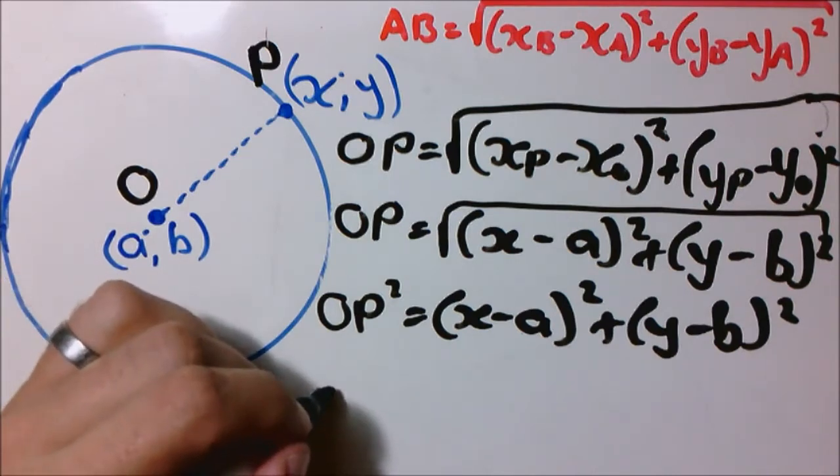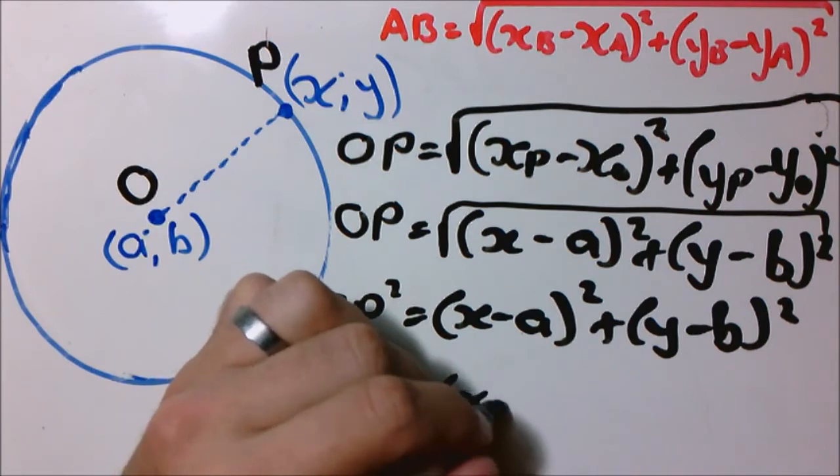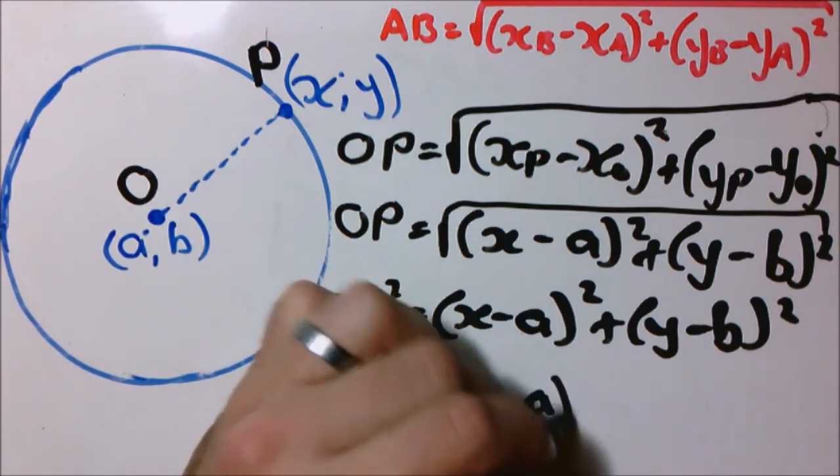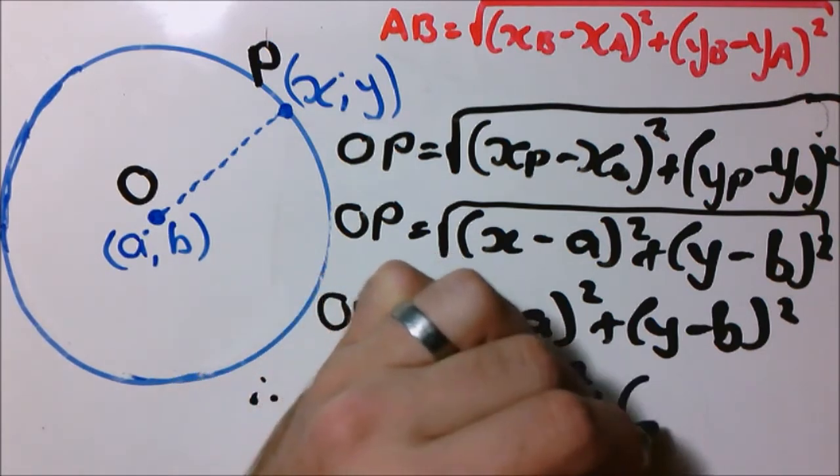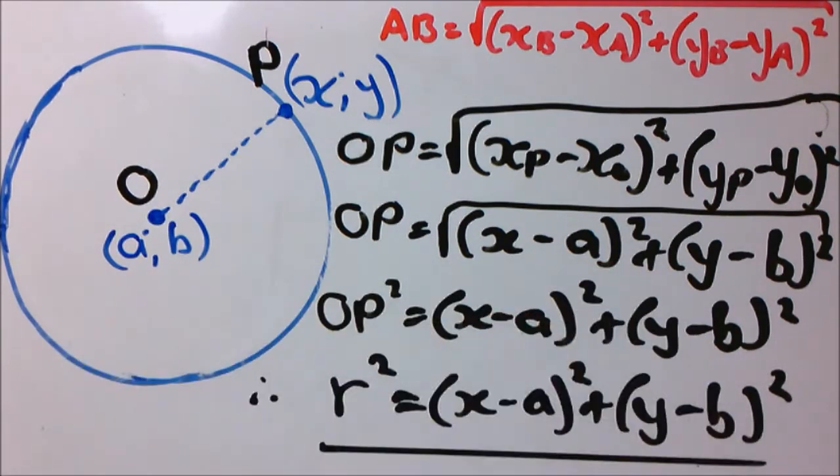So therefore this becomes radius square equals bracket X minus A bracket square plus bracket Y minus B bracket square.